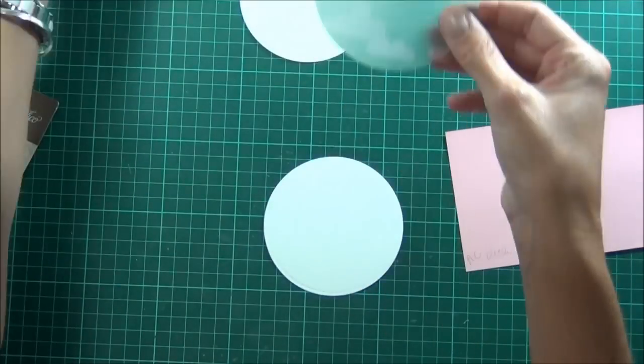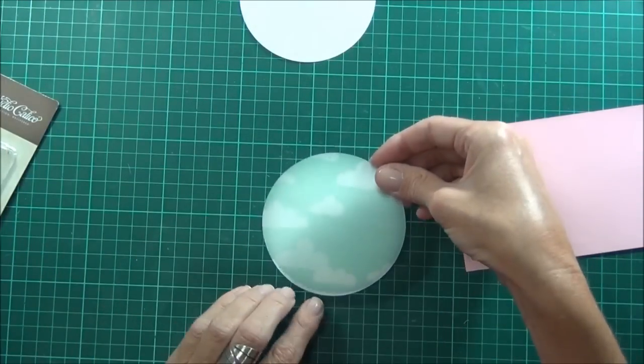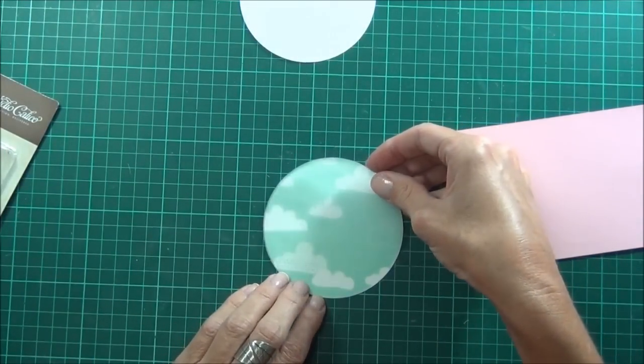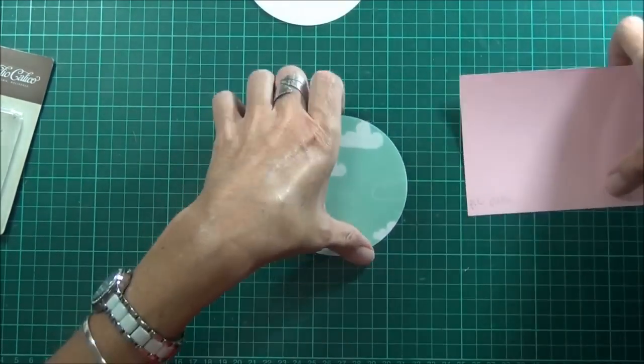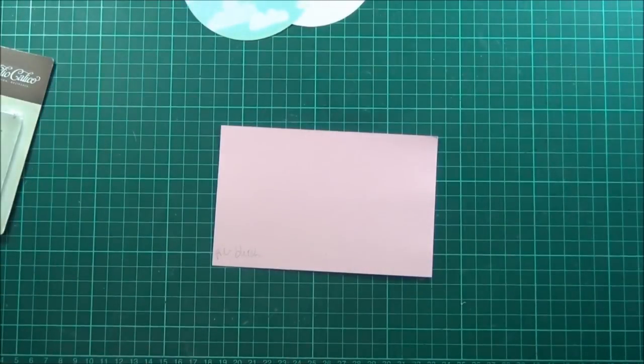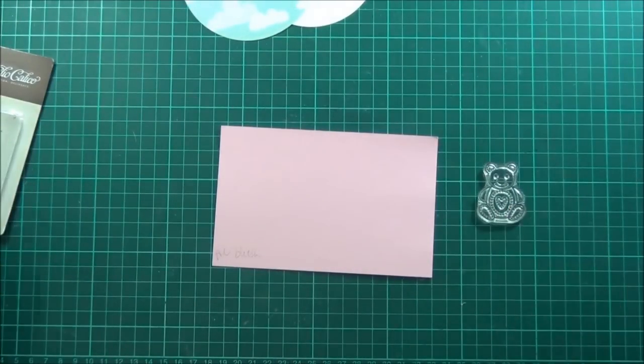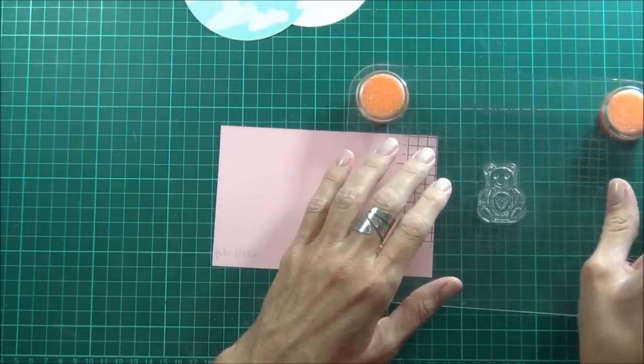Let's grab my vellum piece. Now I'm just going to emboss the bear image out of this set.